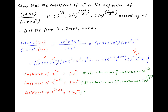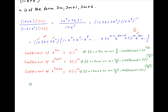Therefore, to summarize, if n is equal to 3m plus 2 or m is equal to n minus 2 upon 3, then the required coefficient is equal to 2 times minus raise to the power m, which is equal to 2 times minus raise to the power n minus 2 upon 3. Therefore, to summarize, the coefficient of x raise to the power n is minus raise to the power n upon 3, when n is of the form 3m.